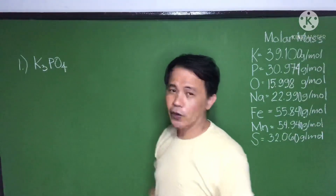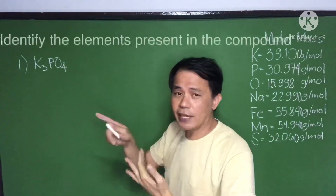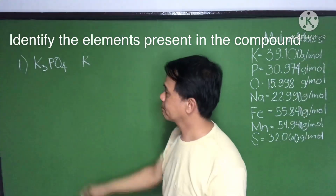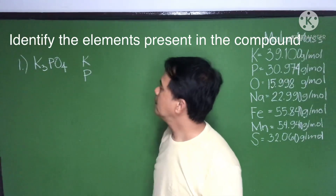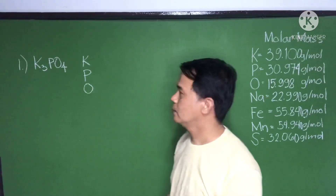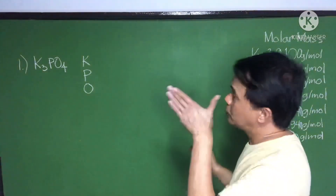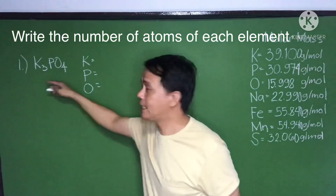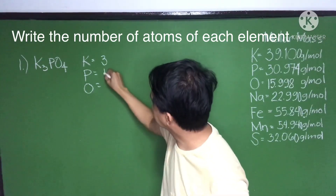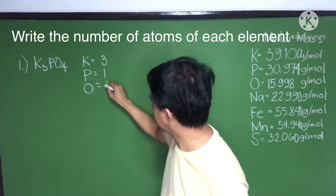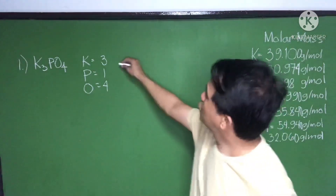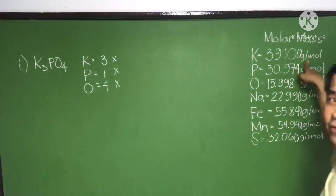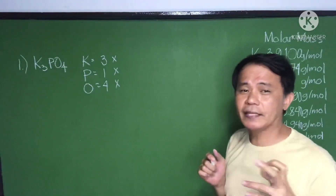The first example is K₃PO₄. The first thing you need to do is identify all the elements that you can see here. They are: potassium, phosphorus, and oxygen. Now just write down the number of atoms of each element. K: you have three. P: you have one. O: you have four. That is the total number of atoms. Then you're going to multiply it by their molar mass. By the way, the unit is in grams per mole — we'll explain that later in our topic.